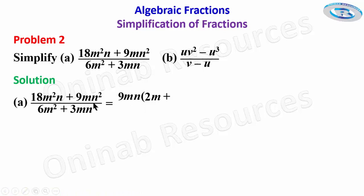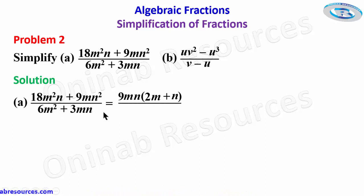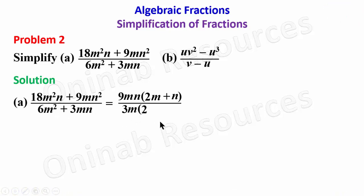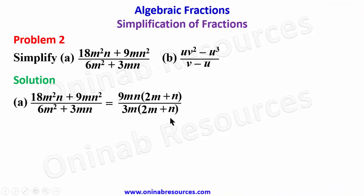The second term: 9mn² divided by 9mn leaves n, so the numerator factorizes as 9mn(2m + n). For the denominator, 3m is common: 6m² divided by 3m gives 2m, and 3mn divided by 3m gives n, so the denominator factorizes as 3m(2m + n).